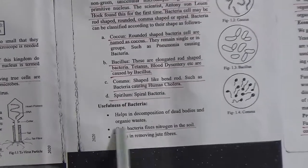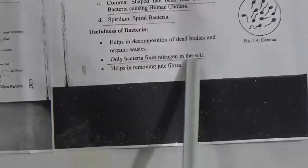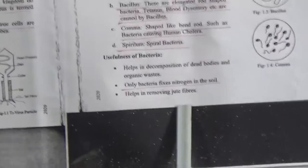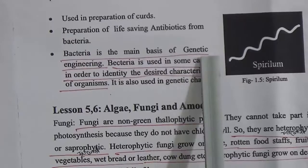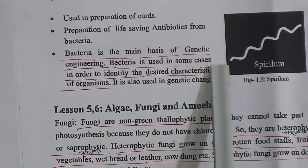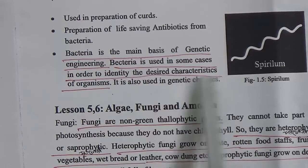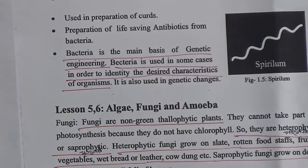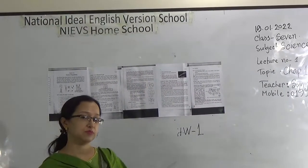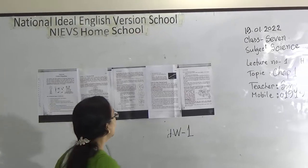Usefulness of bacteria: bacteria helps in the decomposition of dead bodies and organic waste. Bacteria fixes nitrogen in the soil, helps in removing jute fibers, and is used in preparing various products. Life-saving antibiotics are prepared from bacteria. Bacteria is the main basis of genetic engineering and is used in genetic change to identify described characteristics of organisms.